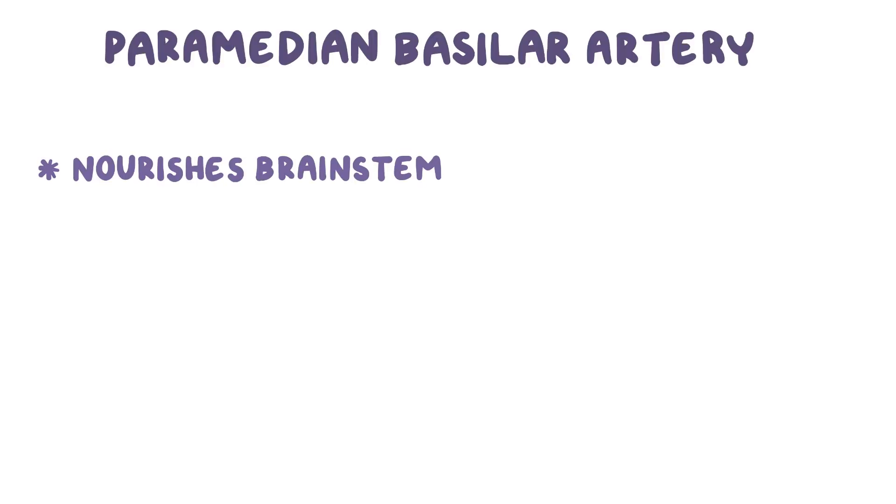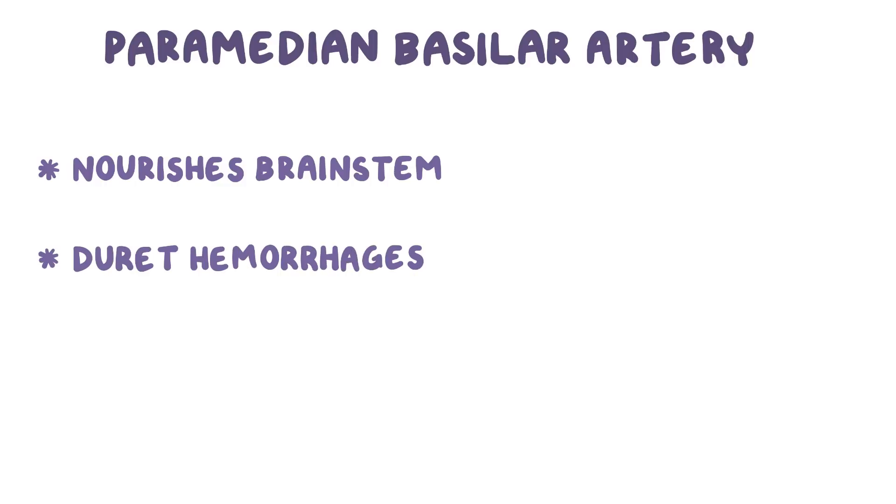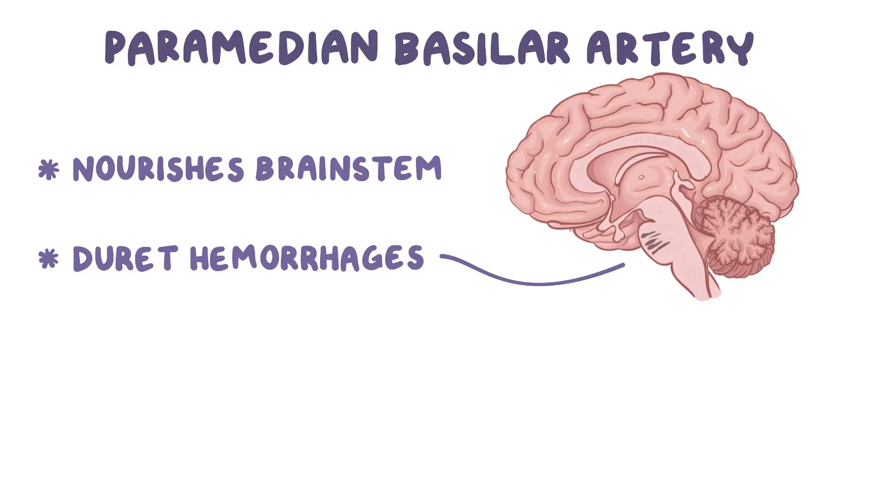Uncal herniation stretches and sometimes breaks branches of the paramedian basilar artery, which nourish the brain stem. That causes small, linear or flame-shaped hemorrhages called Duret hemorrhages, which can be seen on autopsy.